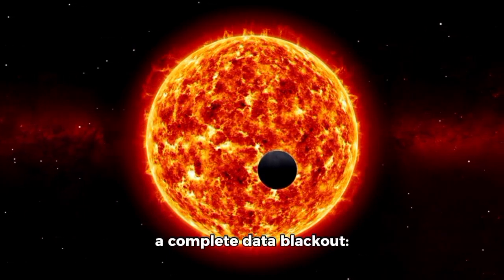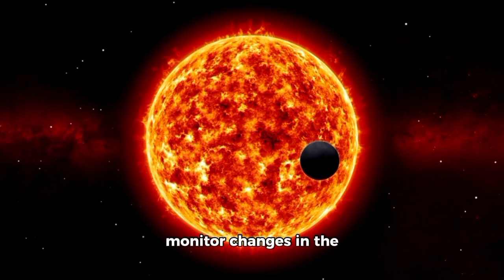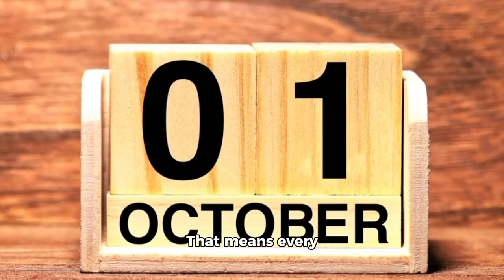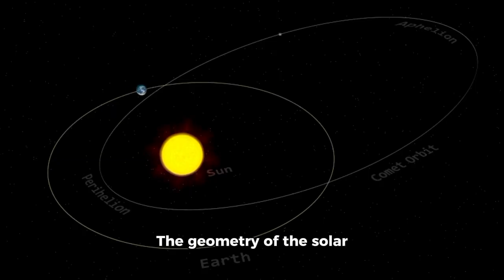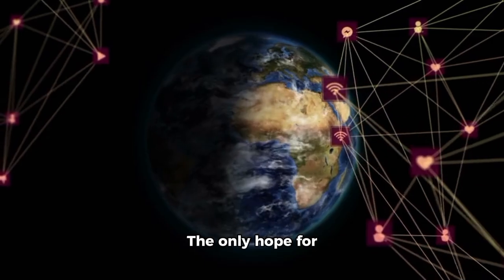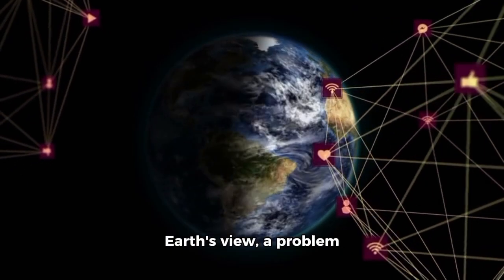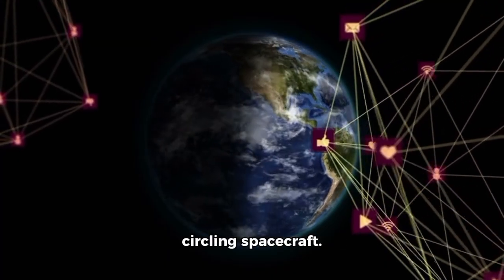As 3i Atlas passes behind the sun from Earth's perspective, there will be a complete data blackout—no direct measurements, no spectra, and no way to monitor changes in the structure or brightness for astronomers. That means every observation prior to October 21st is essential. The geometry of the solar system itself is shutting the door, and the comet will slip out of reach just as it approaches its busiest period. The only hope for continued monitoring will come from assets out of Earth's view, a problem that now lands squarely on the shoulders of Mars' circling spacecraft.